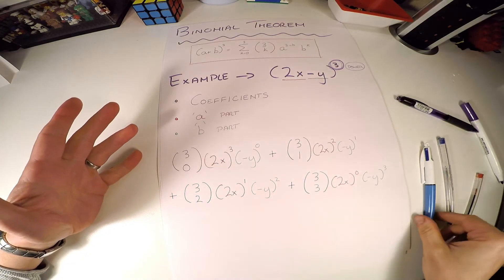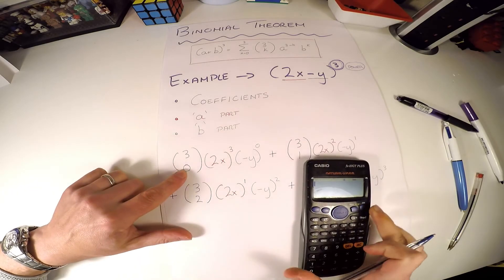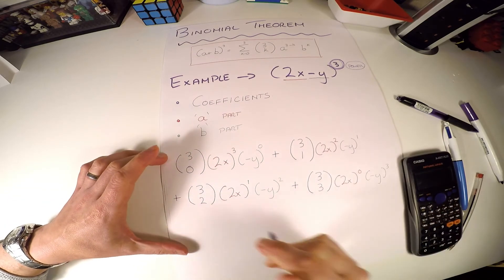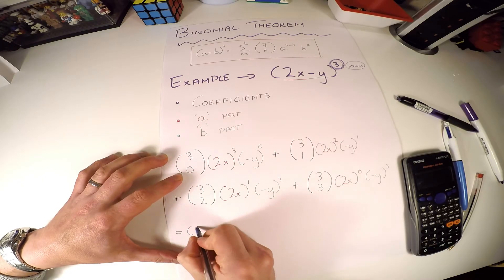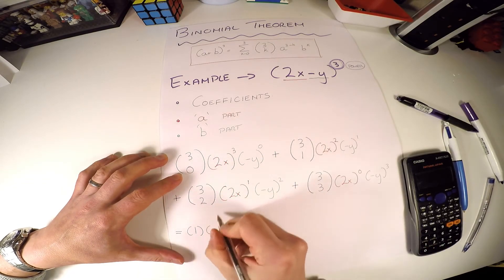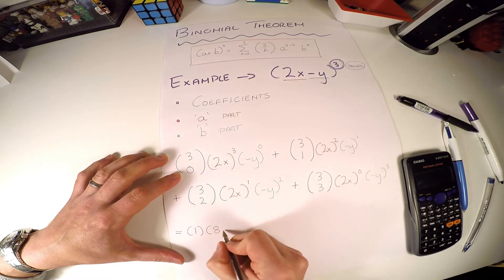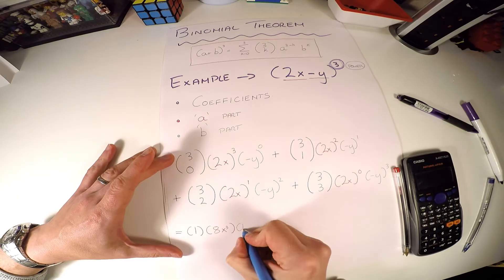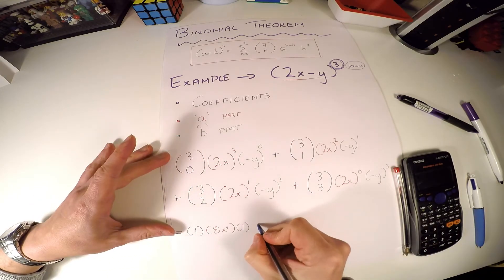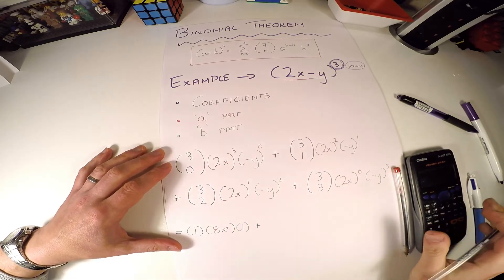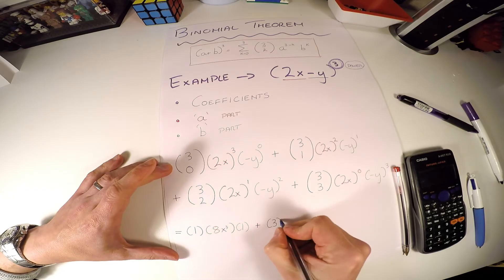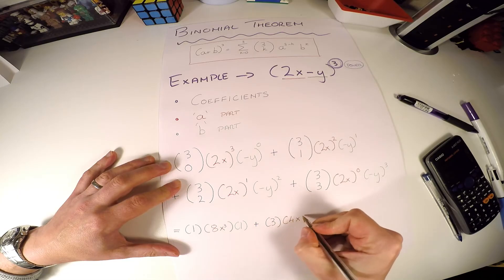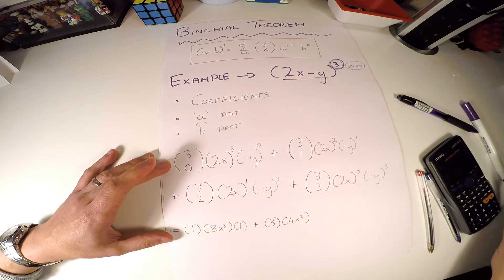Simplifying can be tricky depending on your arithmetic skills, so be careful. For the first term: 3 choose 0 equals 1. Then (2x)³ gives us 8x³, and (−y)⁰ is one — anything to the power of zero is one. So the first term is 8x³. For the second term: 3 choose 1 equals 3. Then (2x)² gives 4x², and (−y)¹ is just minus y. So the second term is 3 × 4x² × (−y).